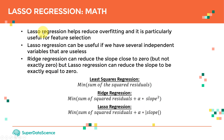Lasso regression helps reduce overfitting and is particularly useful for feature selection. One of the unique elements of lasso compared to ridge regression is that lasso can be used for feature selection — meaning it can give insight into which independent variables are actually useless. Ridge regression cannot directly tell us this.